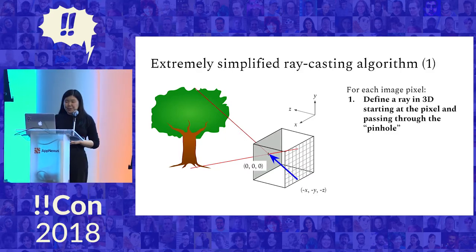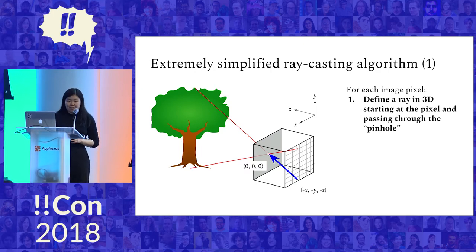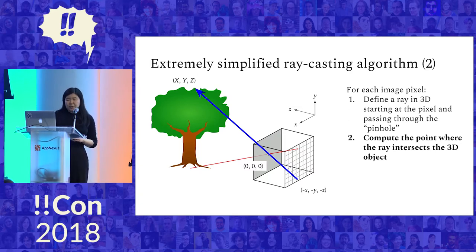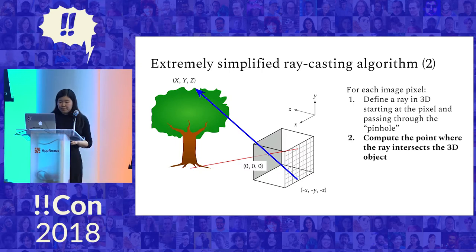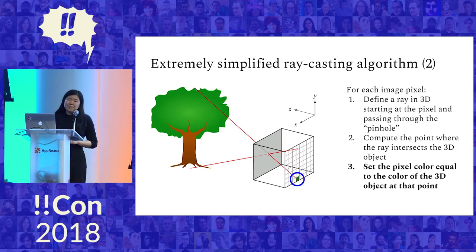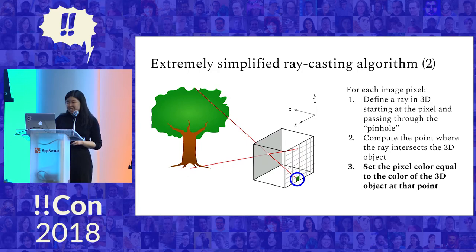For each image pixel, you define a ray in three dimensions which starts at the pixel and passes through the pinhole. You define these two points, and two points define a line — I've put my aperture right at the origin. The next step is that you compute the point where this ray intersects the 3D object, which is basically a geometry problem. Then you just set that pixel color equal to the color of the 3D object at that point, and from that you can render the picture.